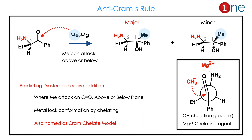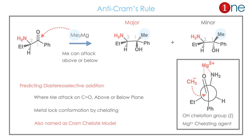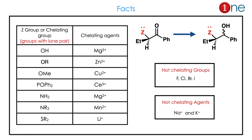Using a Grignard reagent, the methyl group can attack above or below. In Anti-Cram's rule, the metal locks the conformation by chelating — that's what the insert is showing here. Since chelation is involved, it is also called the Cram chelate model. Here we have to see some facts about Cram's model: the Z group is the chelating group.